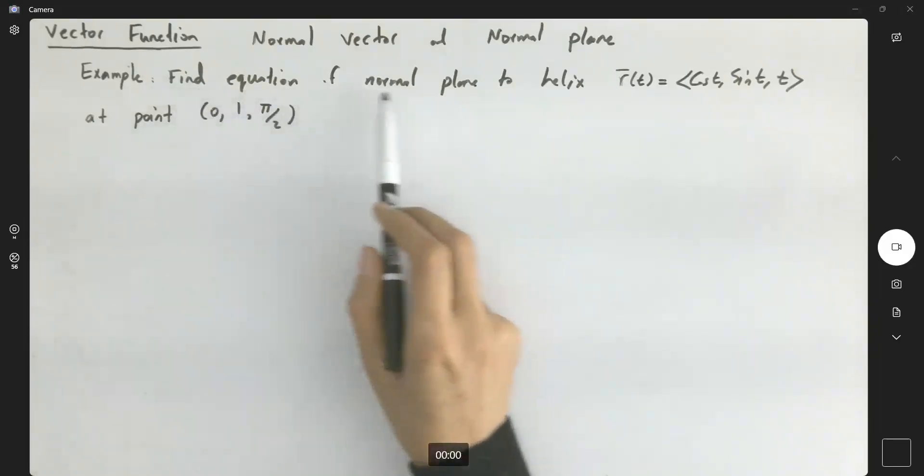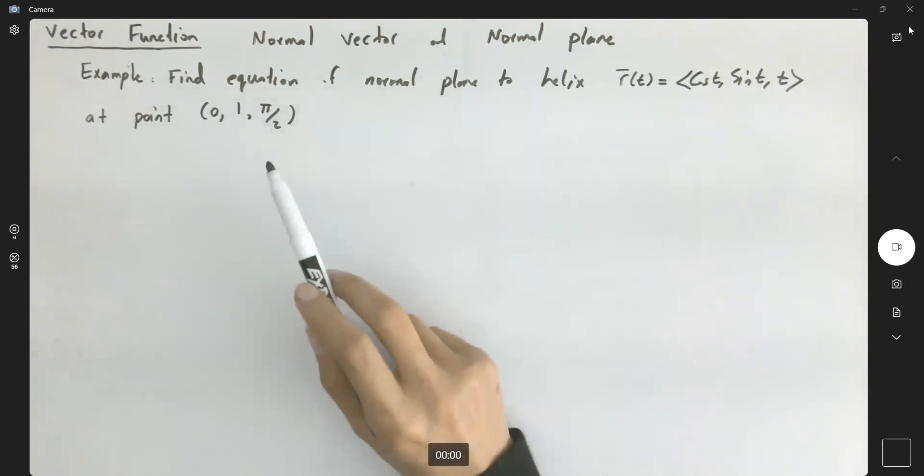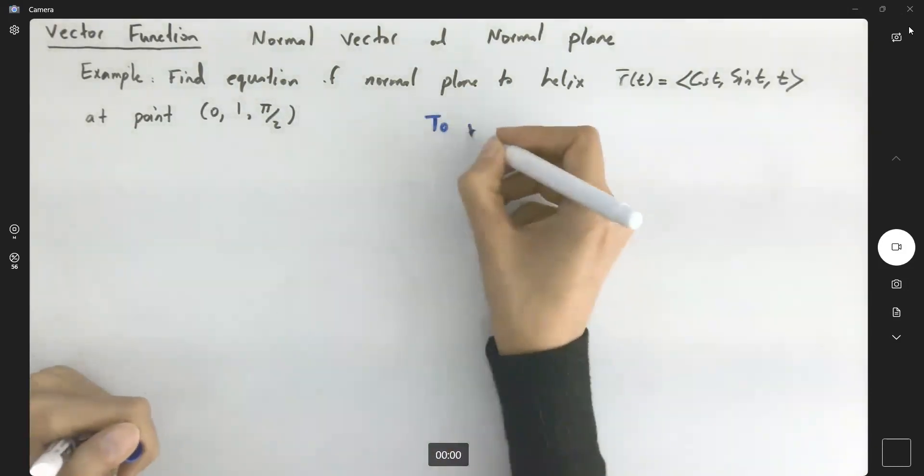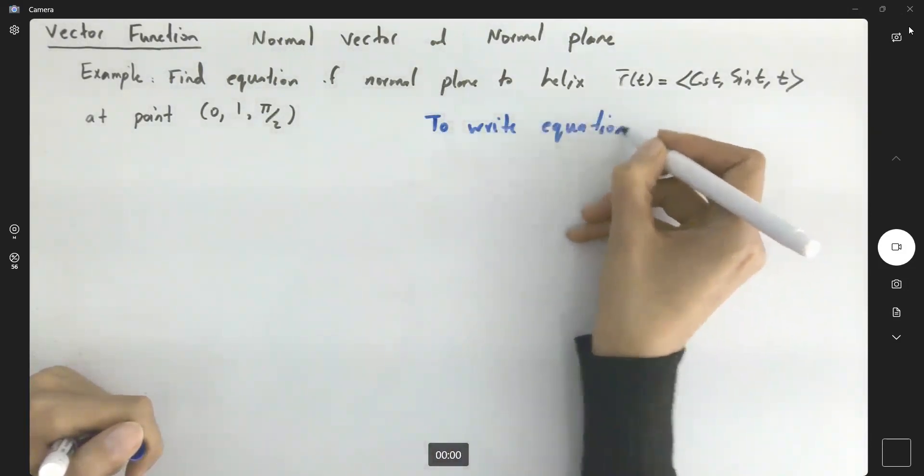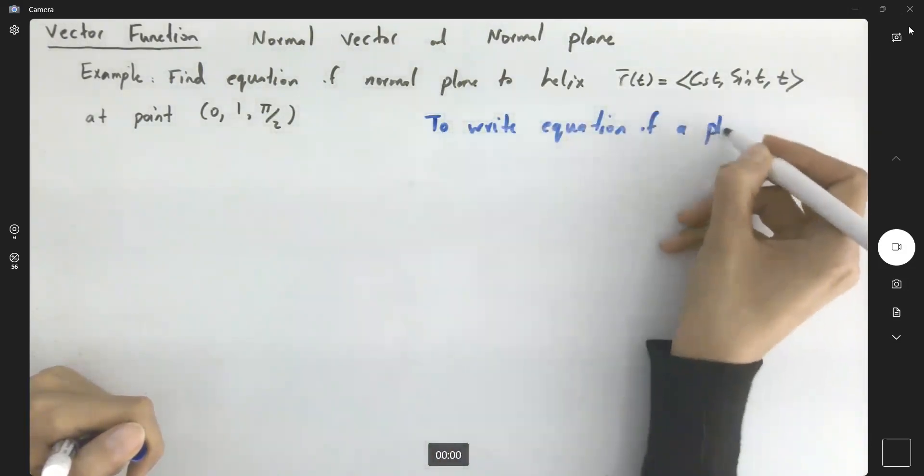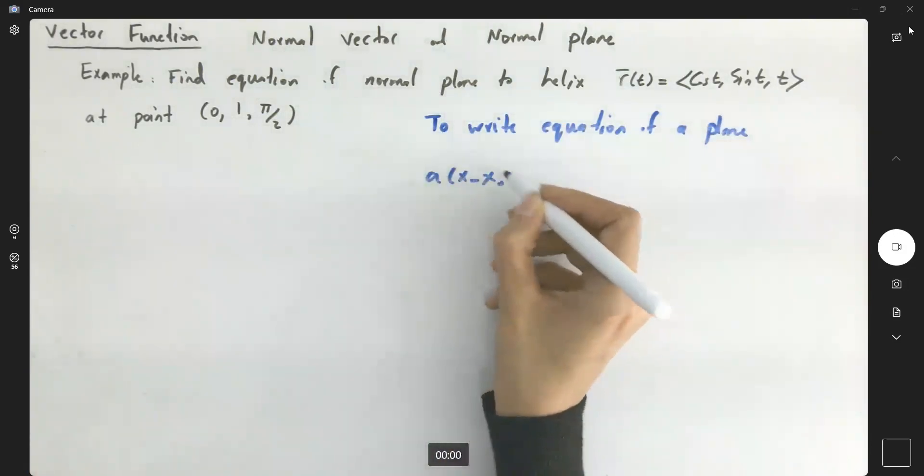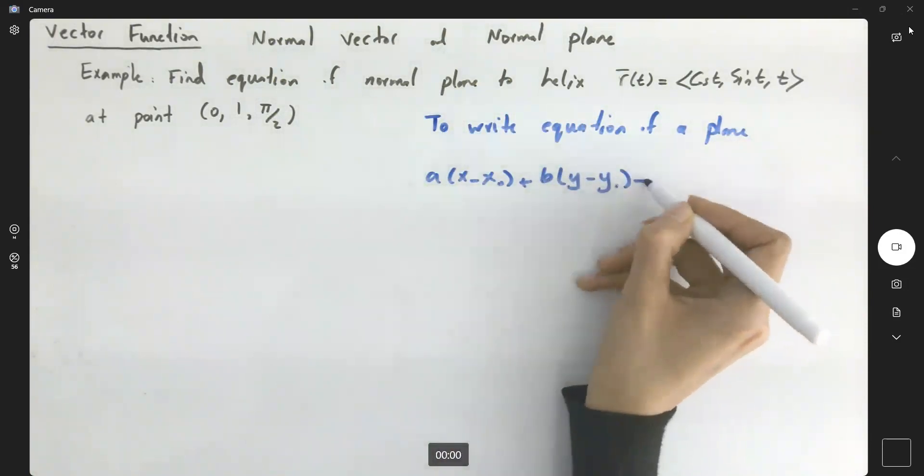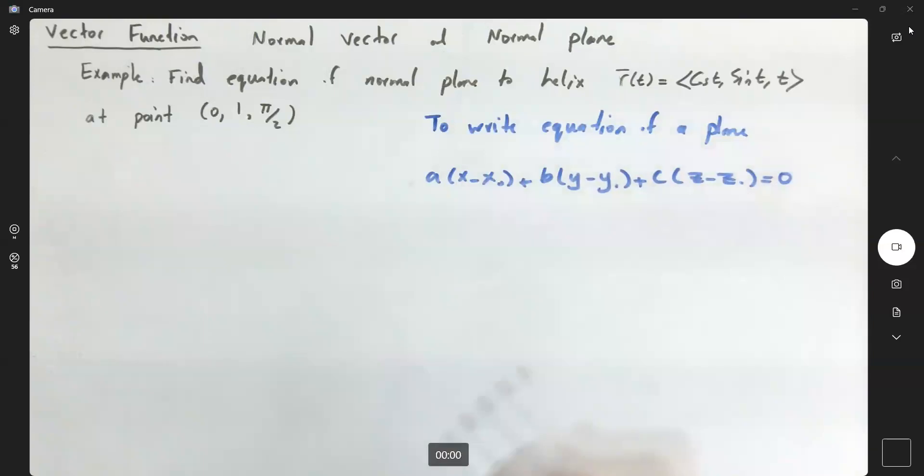Suppose you're interested in finding the equation of a normal plane to the helix at the following point. Well, remember that to write the equation of any plane, like a(x - x₀) + b(y - y₀) + c(z - z₀) = 0.